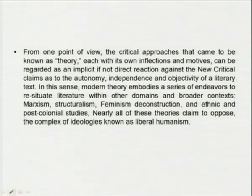Liberal humanism is a literary theory invoked in the late 1800s — the 19th century and early 20th century. From one point of view, it is the state of theory before theory. The critical approaches that came to be known as 'theory' can be regarded as an implicit, if not direct, reaction against the new critical claims as to the autonomy, independence, and objectivity of a literary text. Modern theory embodies a series of endeavors to re-institute literature within broader contexts — Marxism, structuralism, feminism, deconstruction, and postcolonial study.